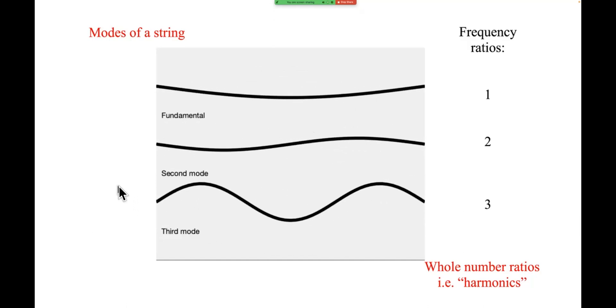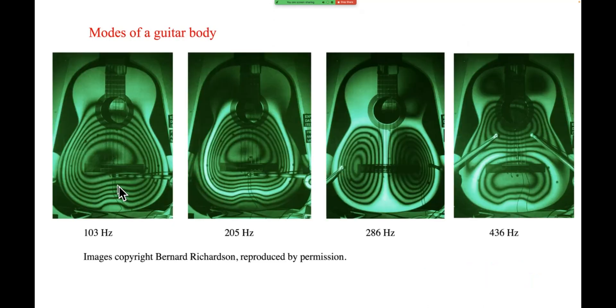So there were two simple systems, the chime bar and the string. Here's a step towards musical instruments.